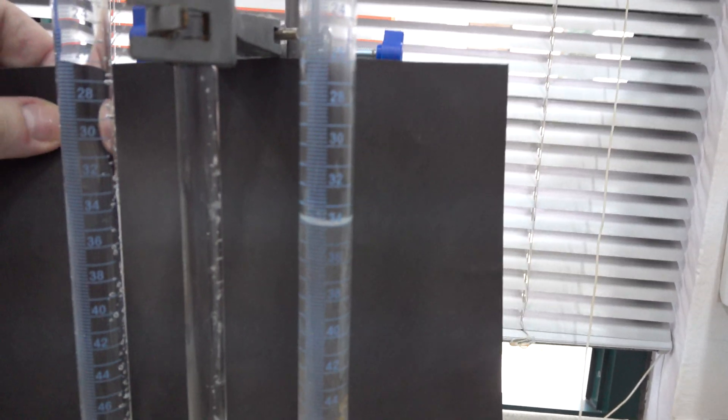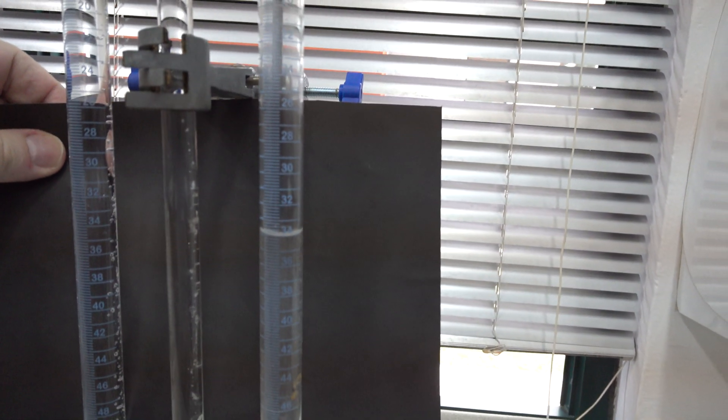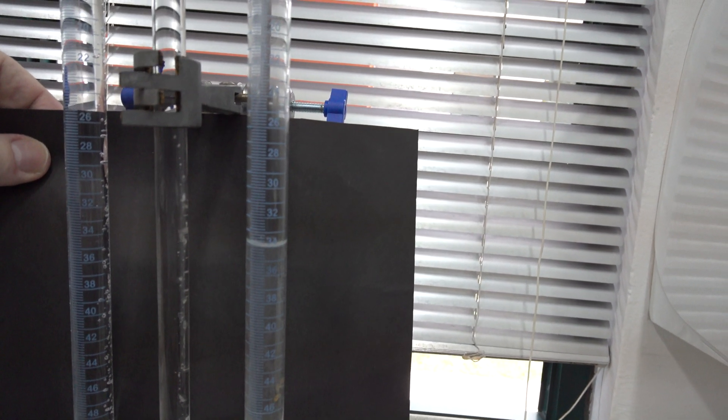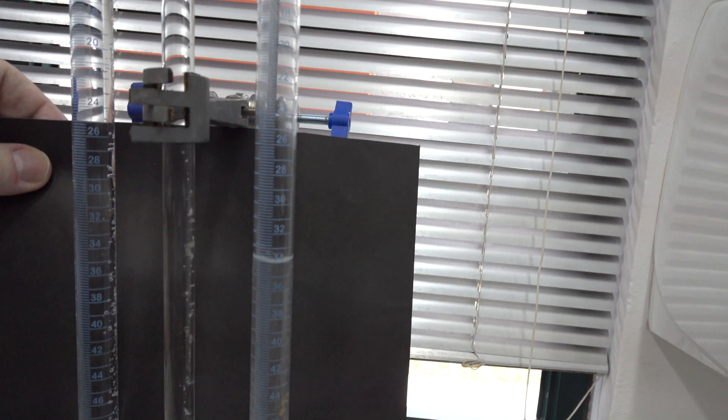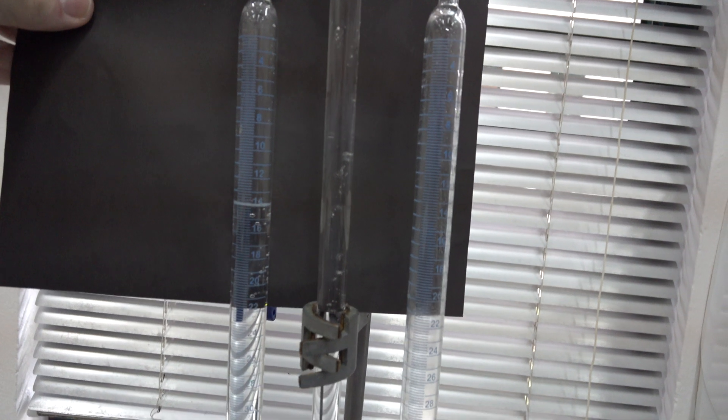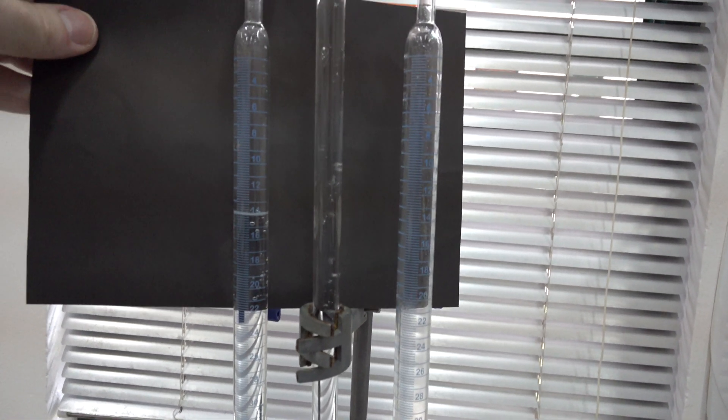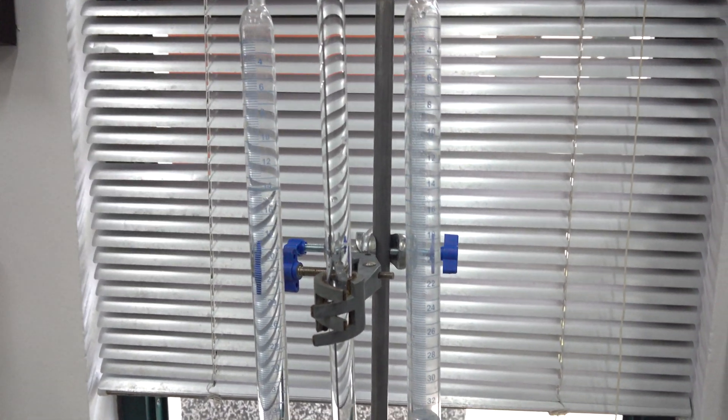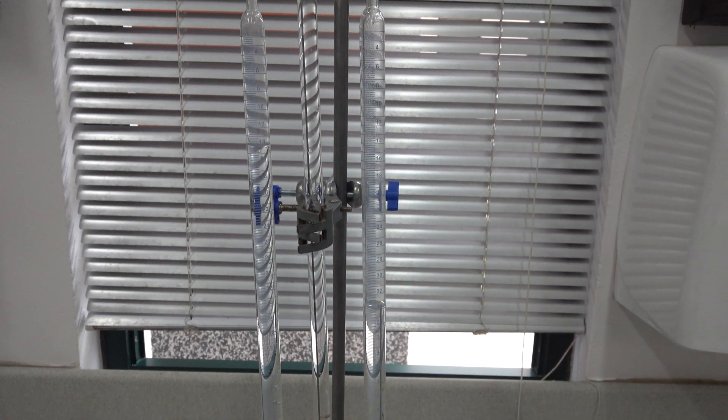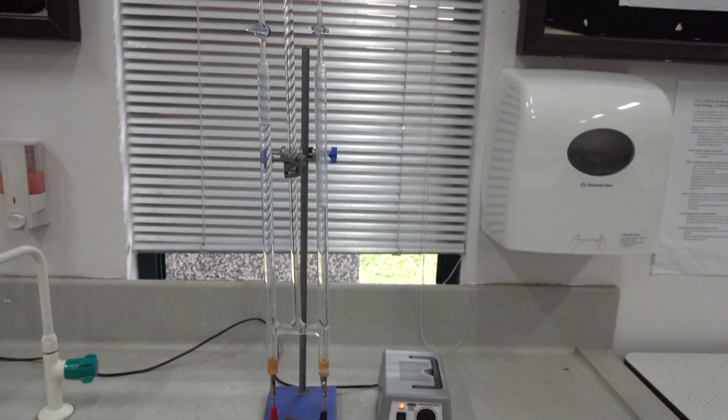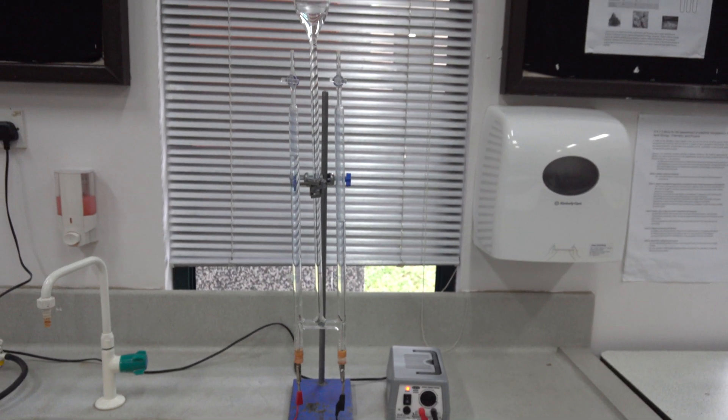If we look at the volume of gas that's been collected, again with the black card, you can see we've got about 33 to 34 cubic centimeters of gas above the cathode, whilst we've got about 14 cubic centimeters of gas above the anode. Let's pause the camera, collect the gases, and see what results we get.